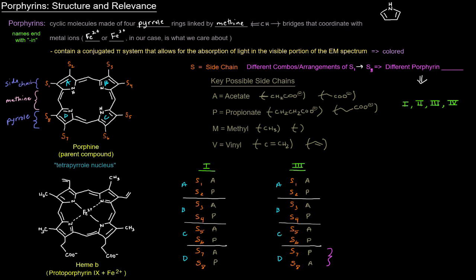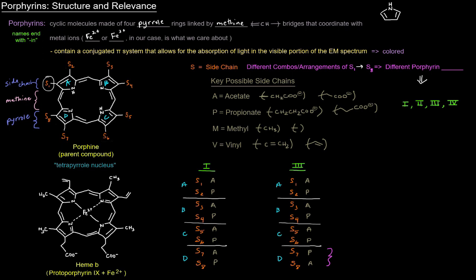We're going to start by looking at ring A — each side chain is designated with S and a number. Going starting from S1 to S2, and the numbers continue clockwise: S3, S4, S5, all the way to S8. The key possible side chains are A, P, M, and V, referring to acetate, propionate, methyl, and vinyl groups, and their structures are shown there.